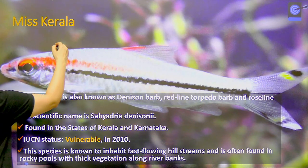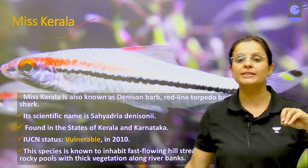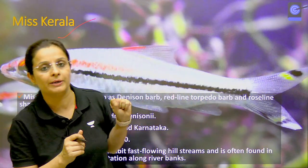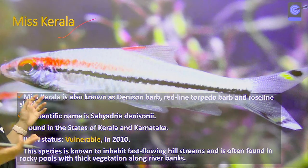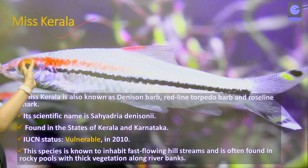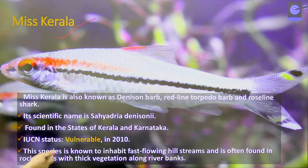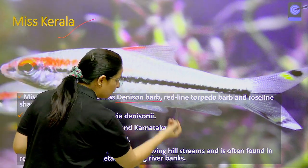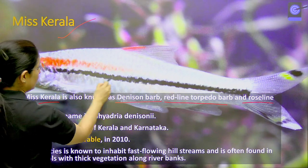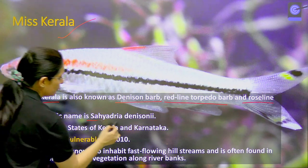The second species we are going to discuss today is Miss Kerala — very, very important. It is in the news because there was an amendment to WPA which put it in protected status, and the question was why it was included. It is an ornamental fish used in aquariums and the pet trade. It is also called Denison Barb, Red Line Torpedo Barb, or Rose Line Shark. Its scientific name is Sayadriya Denisoni.